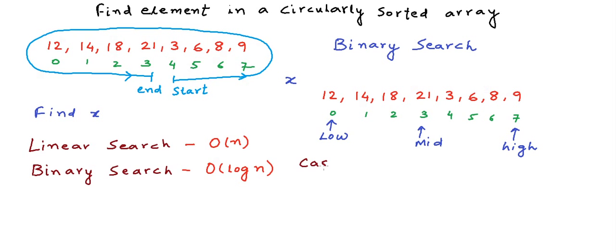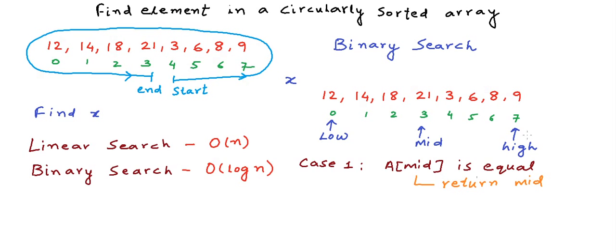The first case is that the element at the mid index, a[mid], is equal to x. As in normal binary search, we compare the middle element with x, and if it is equal, our search is over — we return mid, indicating x exists at index mid. If a[mid] is not equal to x, then in a normal sorted array we would go into the left or right half depending on whether x is greater or less than the middle element. But we cannot apply that straightforward logic here to discard one of the halves.